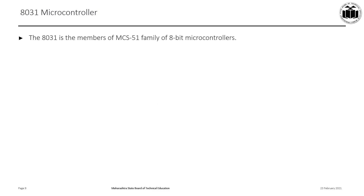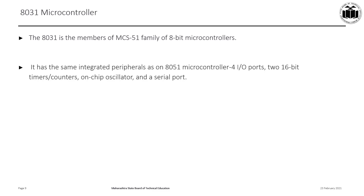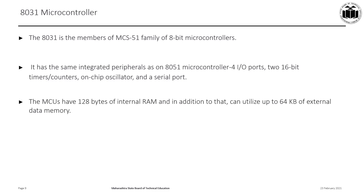The 8031 microcontroller is a member of the MCS-51 family of 8-bit microcontrollers and has the same features as the 8051, like four I/O ports, two 16-bit timers and counters, an on-chip oscillator, and a serial port. Here, the 8031 has 128 bytes of internal RAM, and in addition to that we can extend the RAM memory to 64 kilobytes of external data memory.